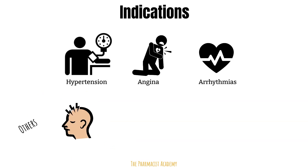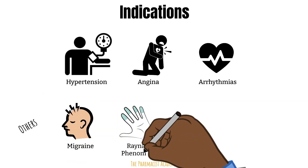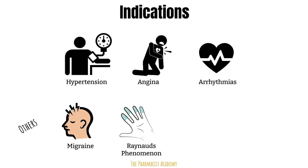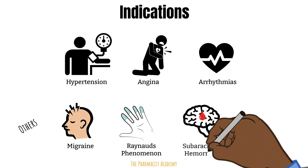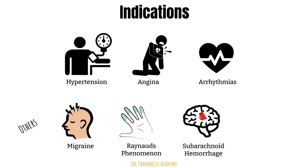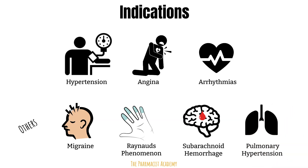Other uses include migraines, Raynaud's phenomenon — a condition that causes decreased blood flow to the fingers — subarachnoid hemorrhages, or bleeding into the space between the brain and the skull. Calcium channel blockers in this case have been shown to counteract the narrowing of blood vessels after subarachnoid hemorrhage and to protect the brain against periods of ischemia. And lastly, pulmonary hypertension.